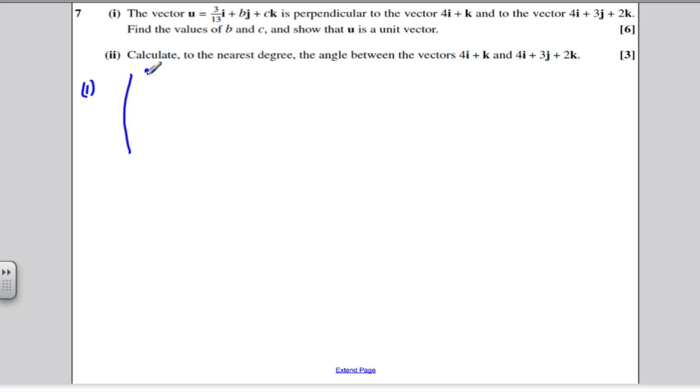I'm going to write the vectors as column vectors, I find that easier. 3/13 with B amounts of j and C amounts of k. If I dot that with 4 i's, no j and 1 k, I'm going to get zero because the two are perpendicular.